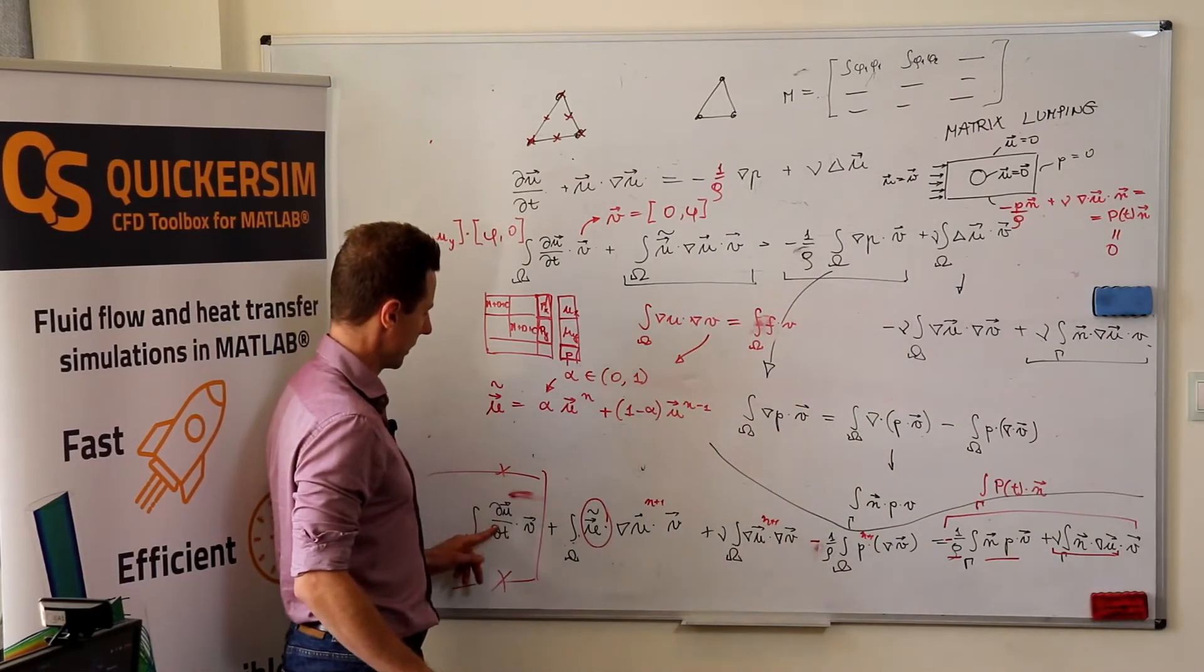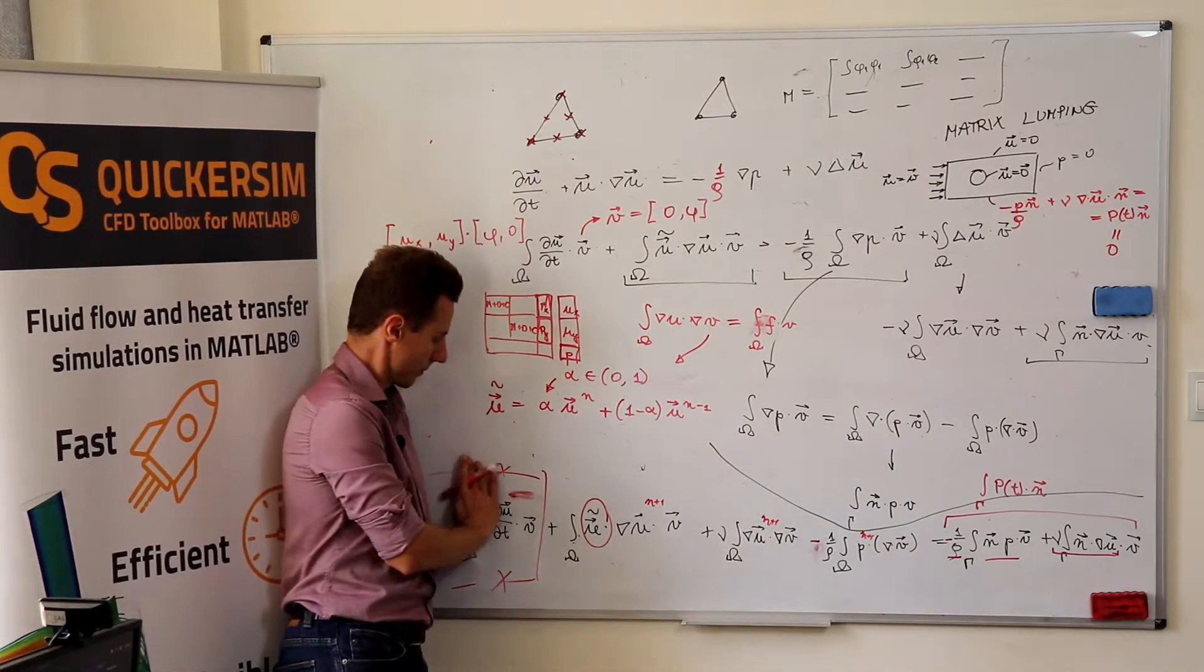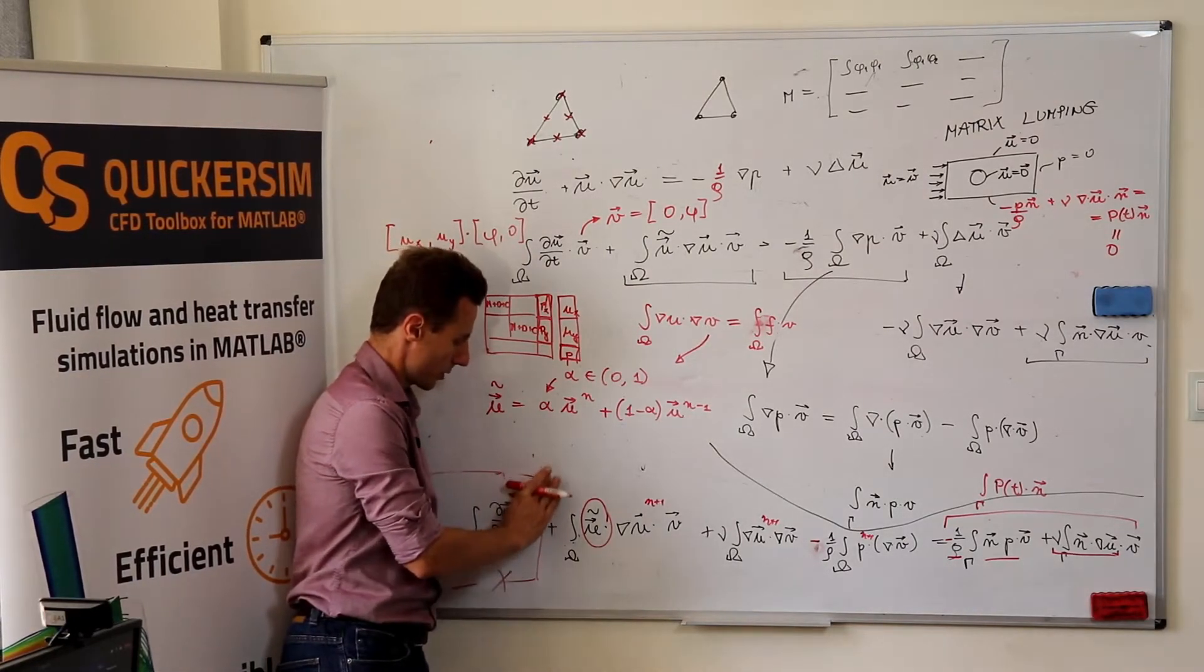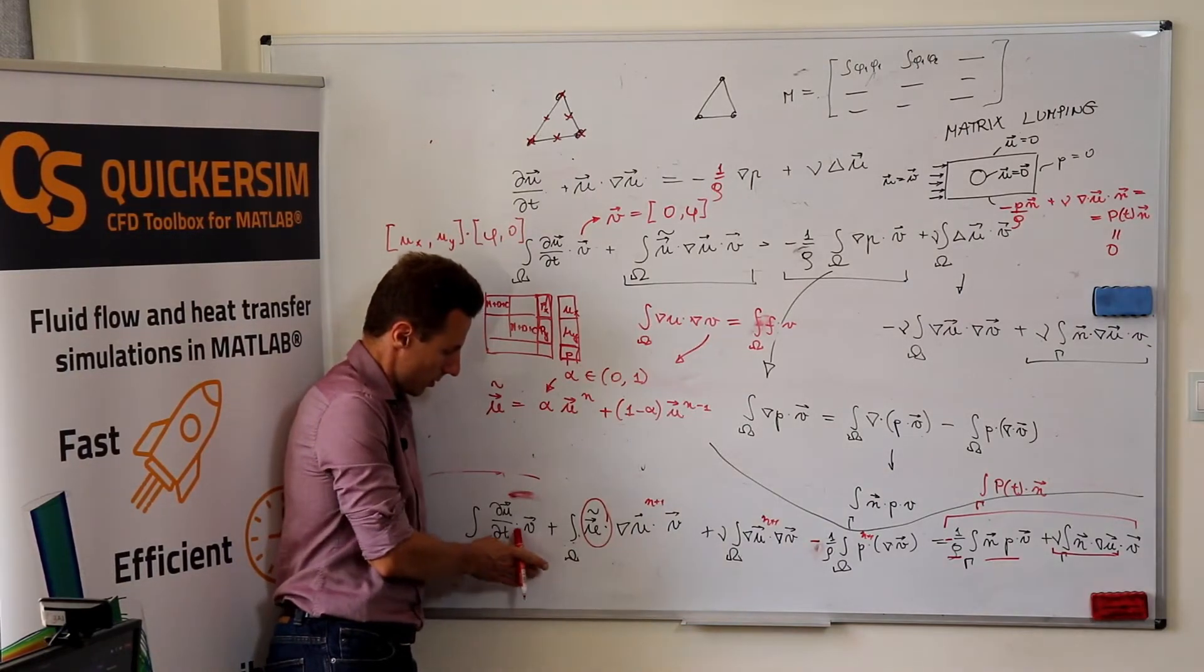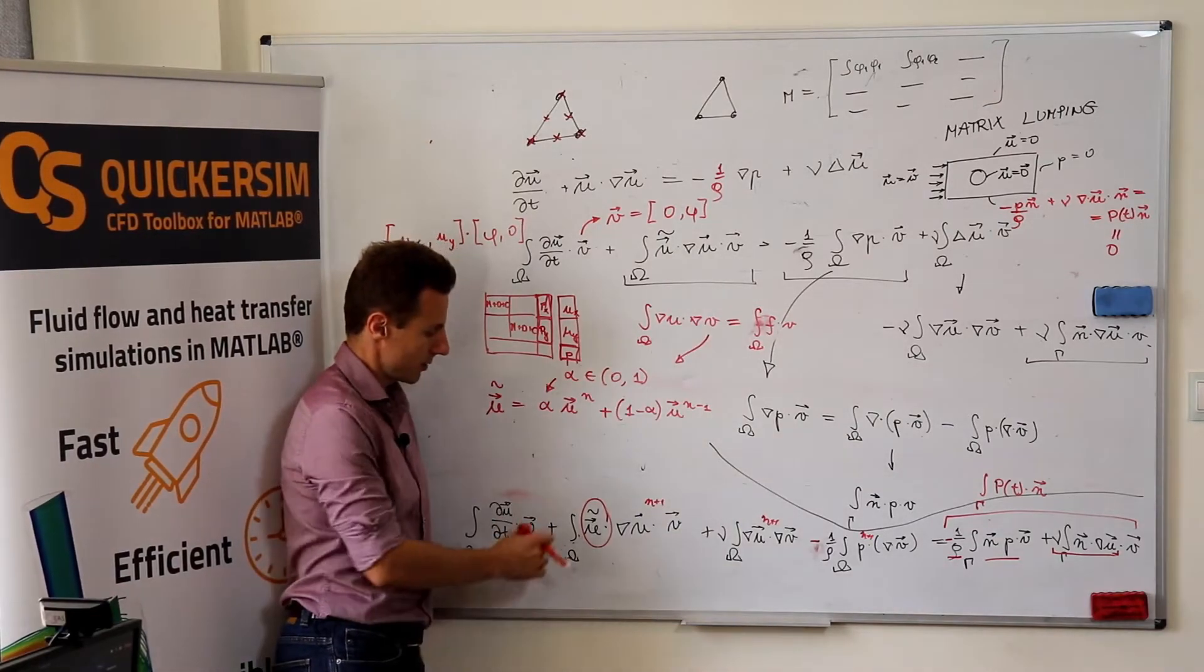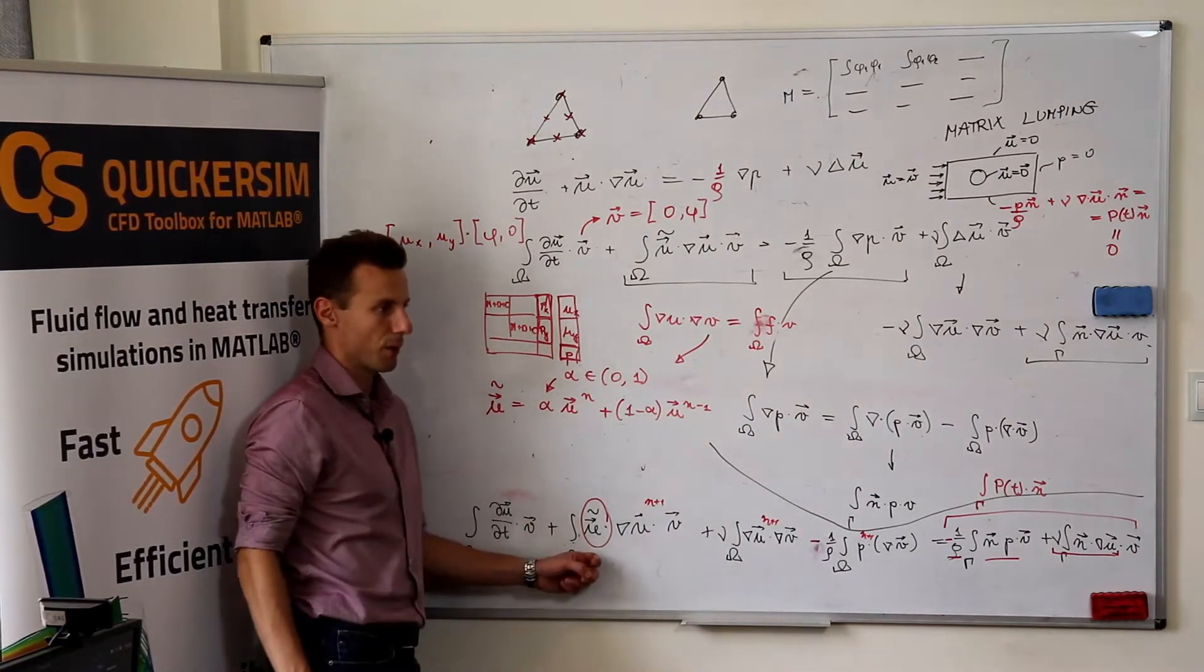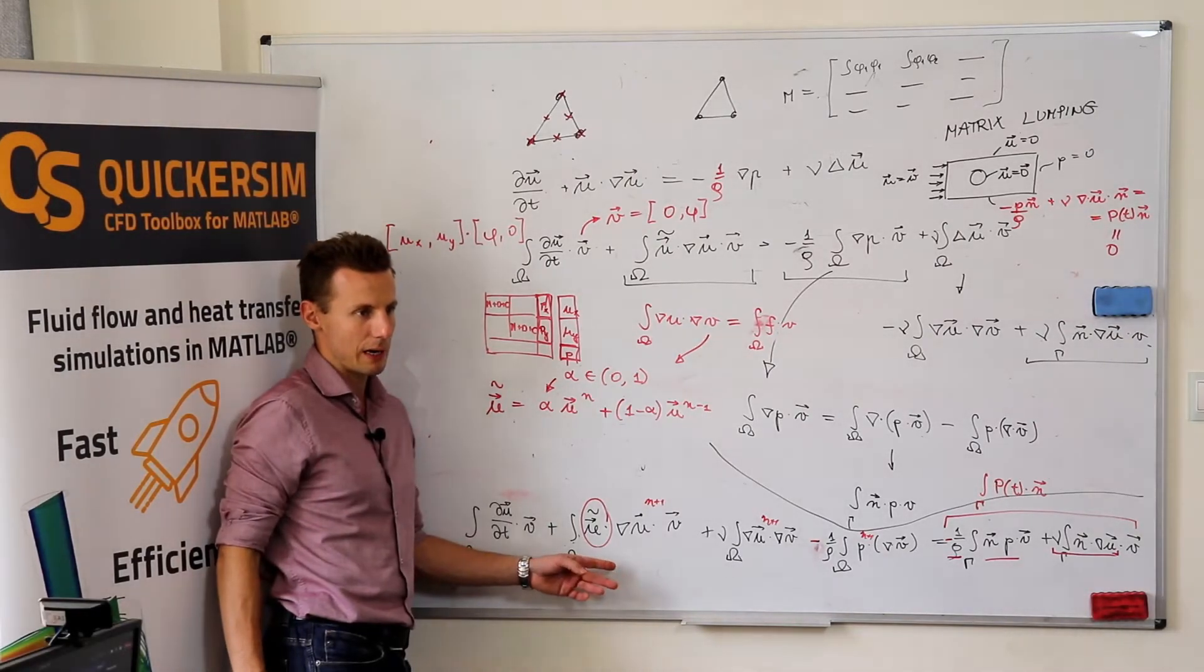Now, let's assume we deal with the unsteady problem. What's the naive way? It's obviously the naive way is to take the velocity field from the previous time step. What other solutions do you have?